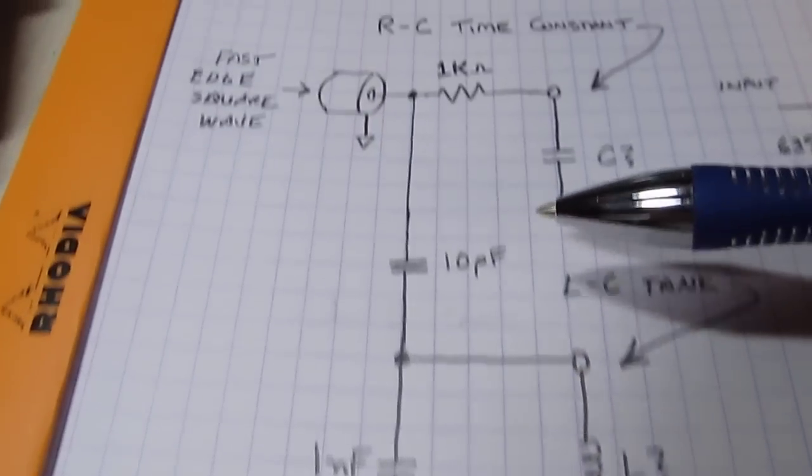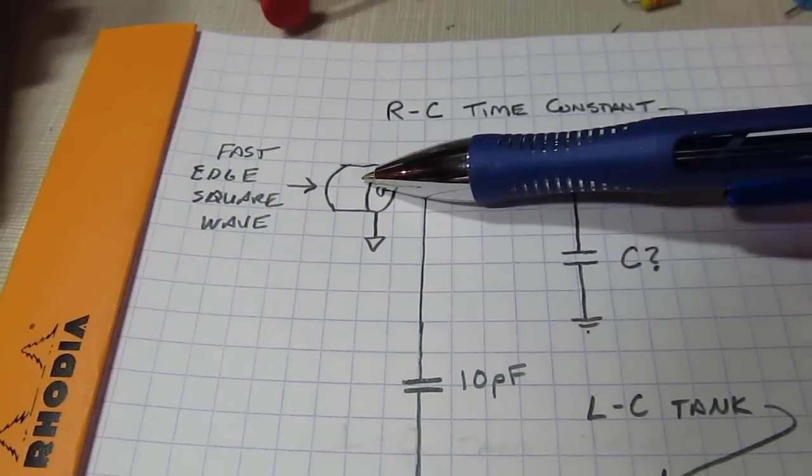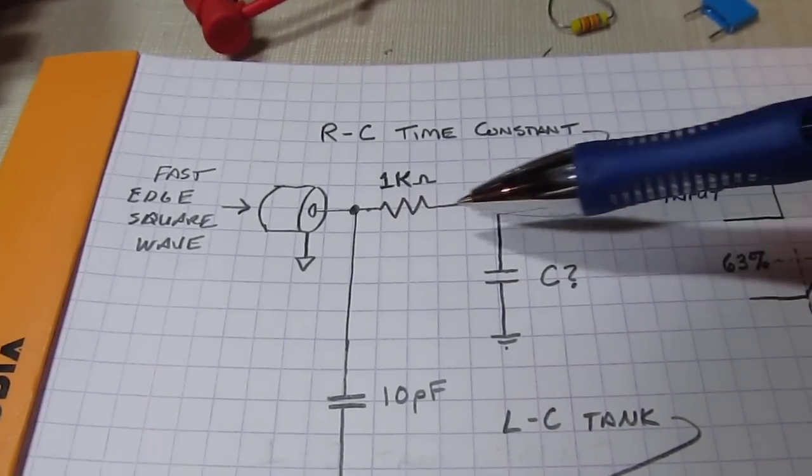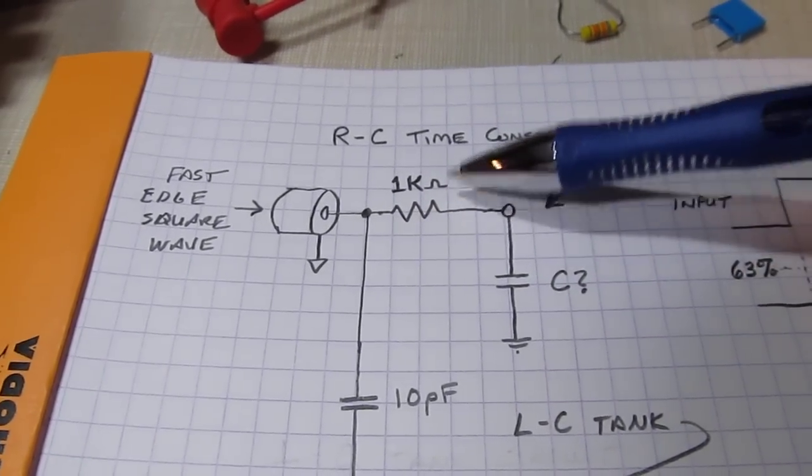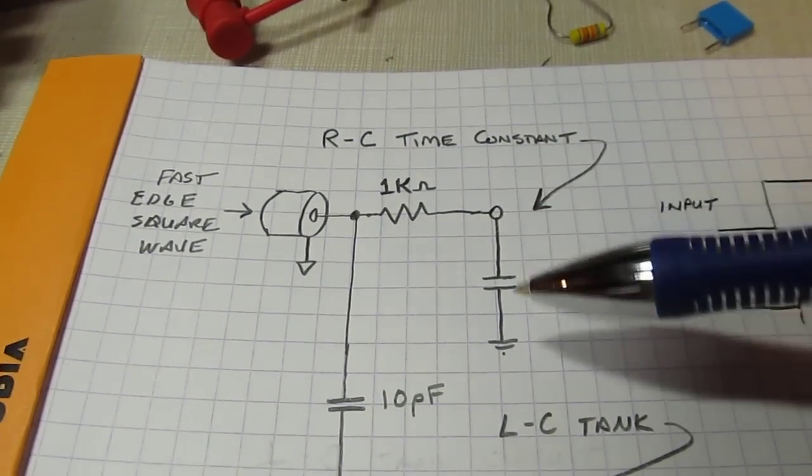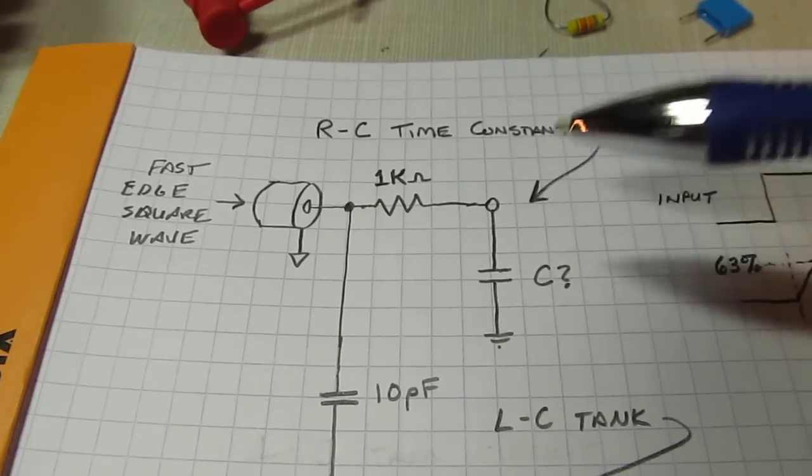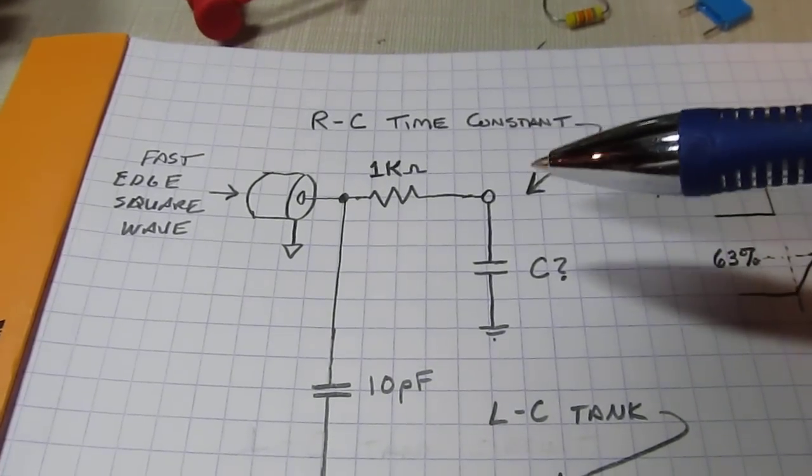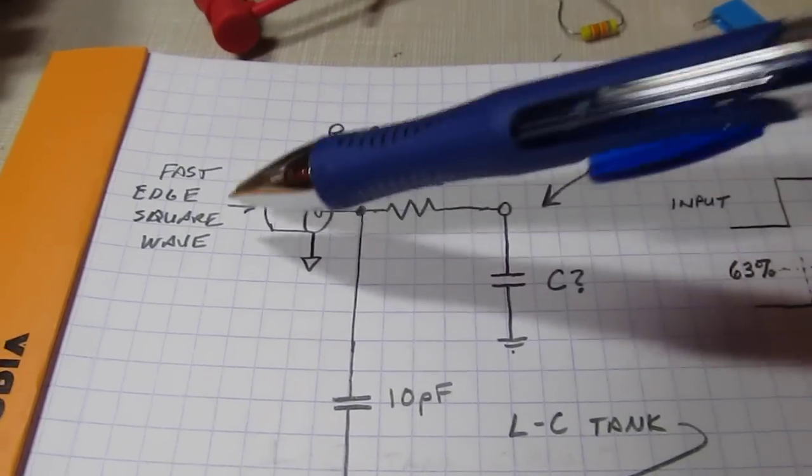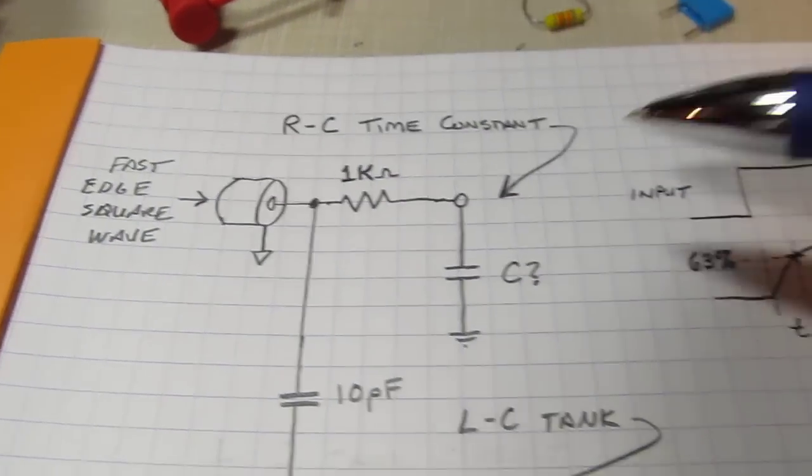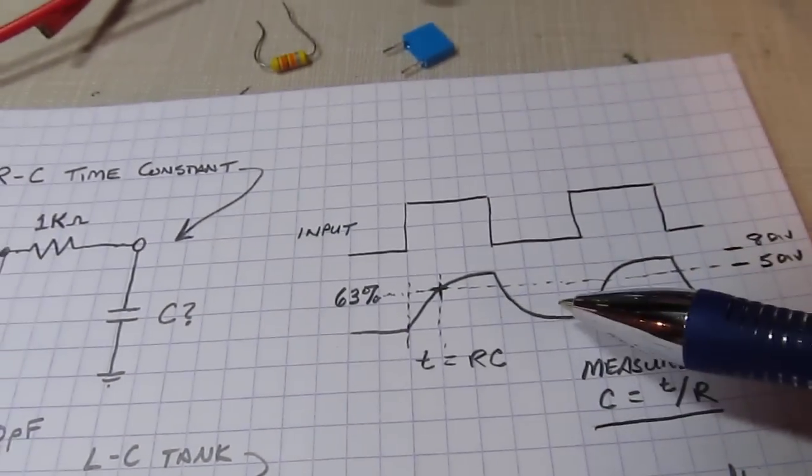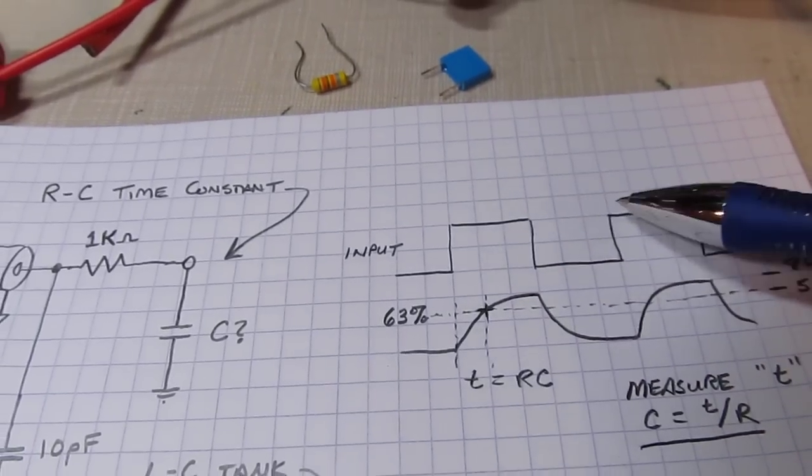The fixture is basically this circuit right here. We've got our input here as a BNC connector. The first part to measure the unknown capacitance is a simple resistor - I chose 1k ohm, you can use something else, but 1k ohm works out just fine for the frequency I'm dealing with. Then we put our unknown capacitor here. So we take our fast edge coming in here and we measure the response across the capacitor.